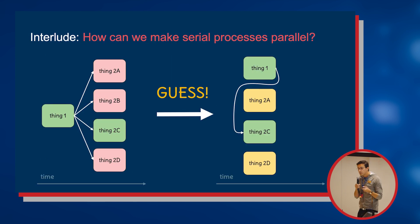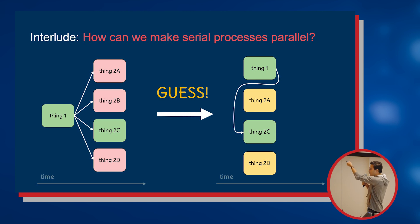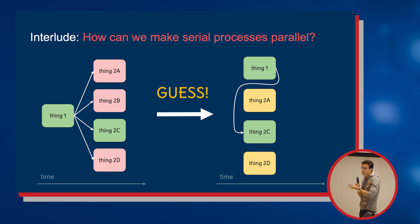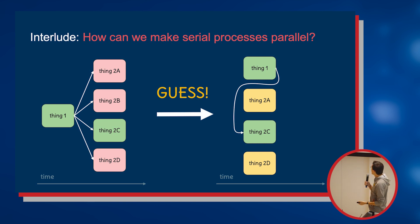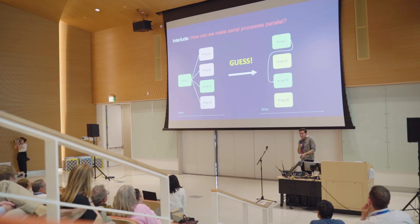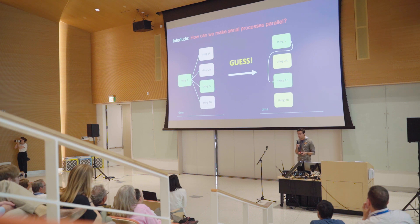So how do we turn annoying sequential stuff into parallel stuff? Here's my example: I have thing one that I have to do, and then depending on that I might have to do A, B, C, or D — and it turns out C is the right one. How do I make this parallel? I just guess what's going to happen and run my guesses at the same time. If I'm right, I get free stuff; if I'm wrong, I throw it away, which is annoying but hopefully doesn't cost too much.